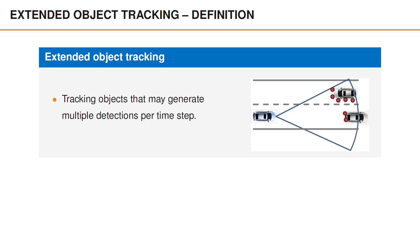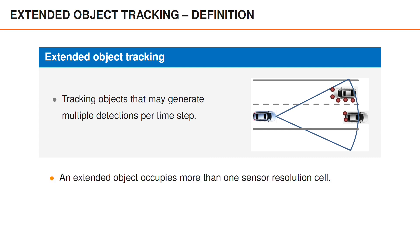Extended object tracking is when we track one or several objects that may generate more than one measurement per measurement scan — that is, more than one measurement per time step and sensor. As illustrated in the figure, the fact that we may obtain multiple detections from the same object means that the object does not fit in a single resolution cell. The term 'extended' refers to the fact that the object extends spatially across multiple resolution cells.